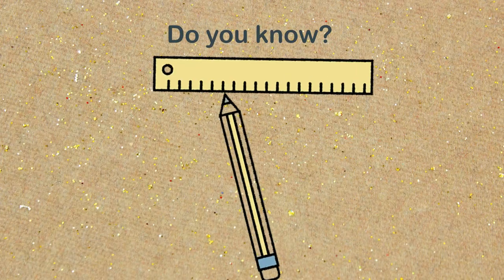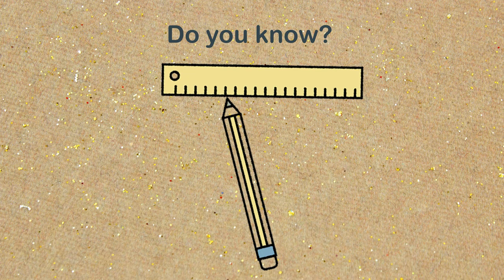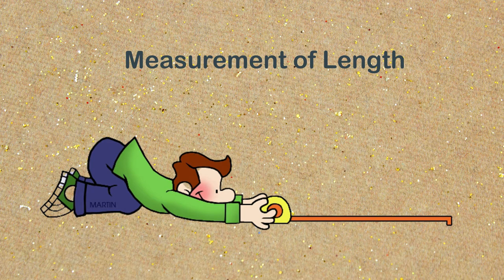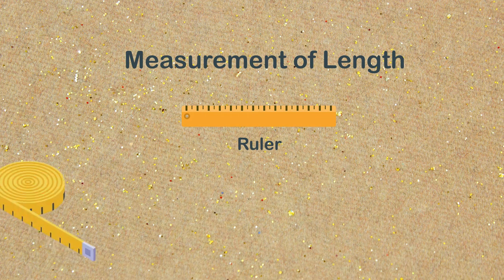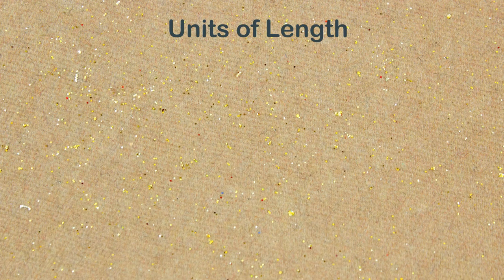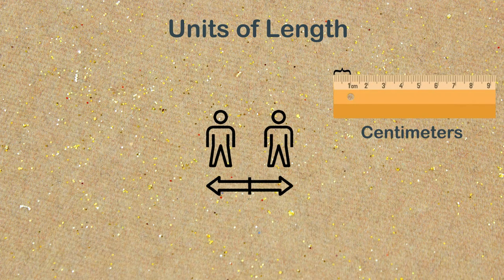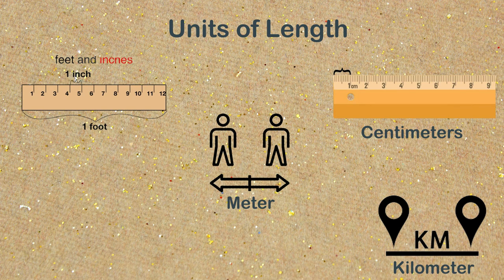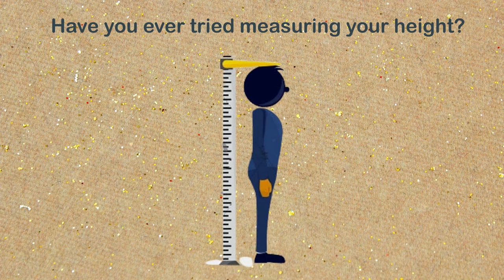Do you know the ruler you use is a measuring instrument? It has centimeters and inches as measuring units. We can measure length and distance using instruments such as a ruler, a measuring tape, or a meter rod. The common measuring units of length are centimeters, meters, kilometers, inches, foot, and mile. Have you ever tried measuring your height? What instrument did you use?